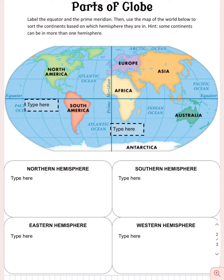The eastern hemisphere is everything to the east of the prime meridian, and everything to the west of the prime meridian is the western hemisphere. First, you'll label the equator and the prime meridian to review what those lines are. Then you're going to type in these spaces what continents are in those hemispheres.